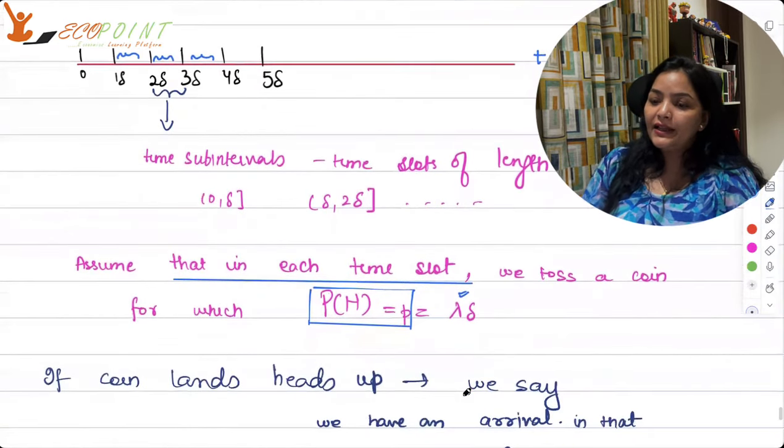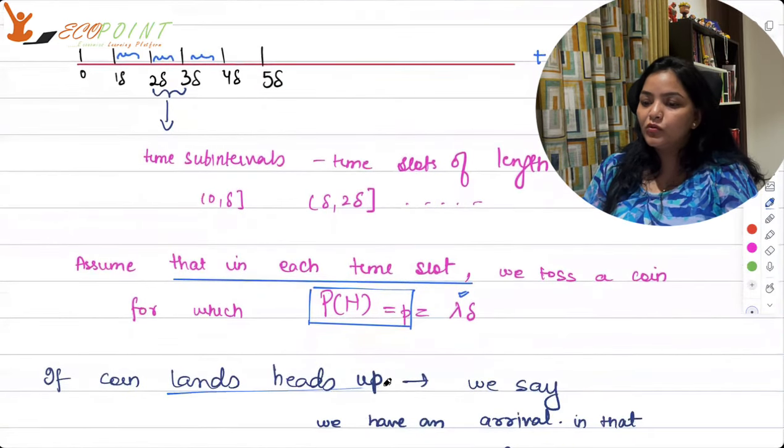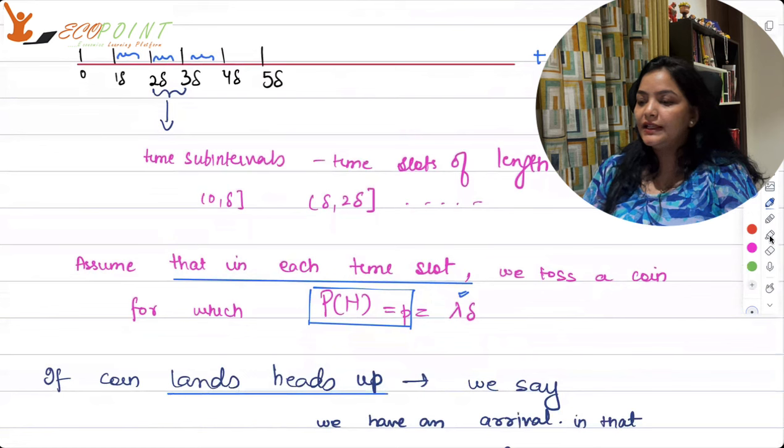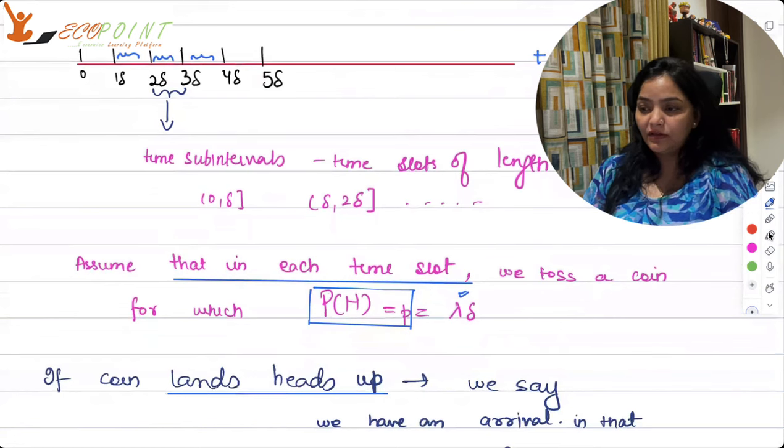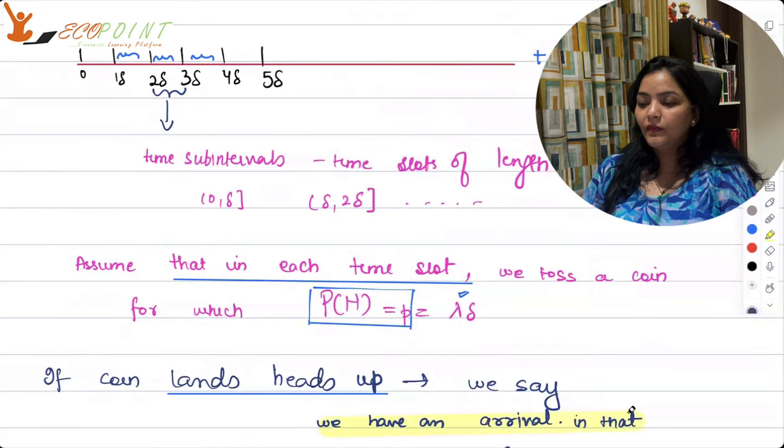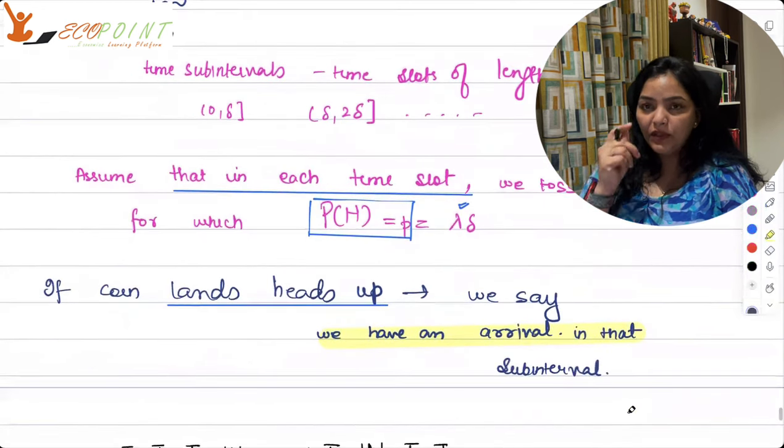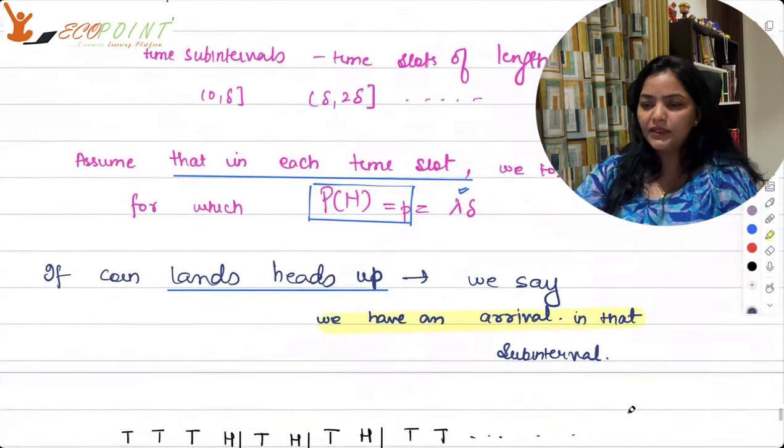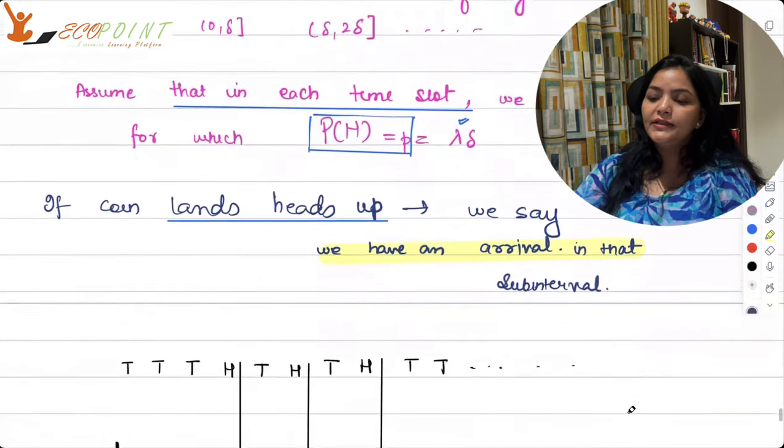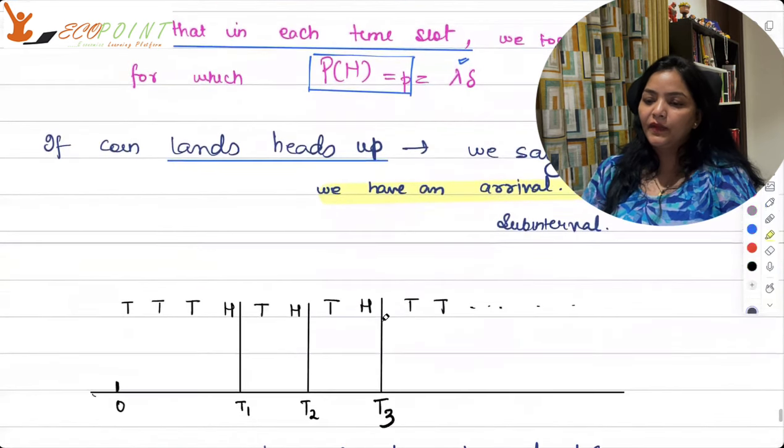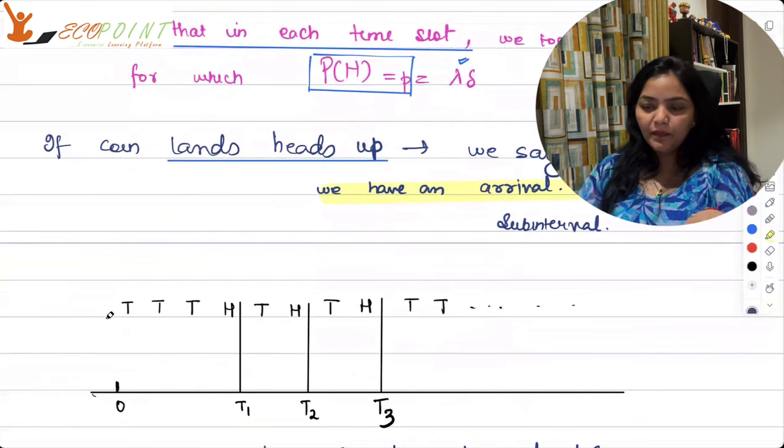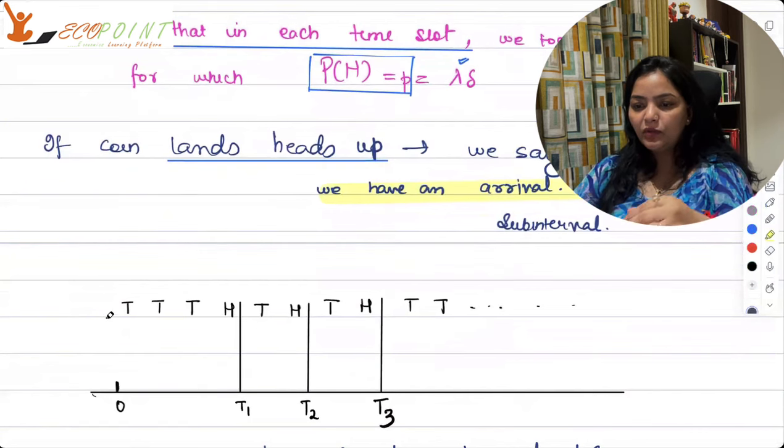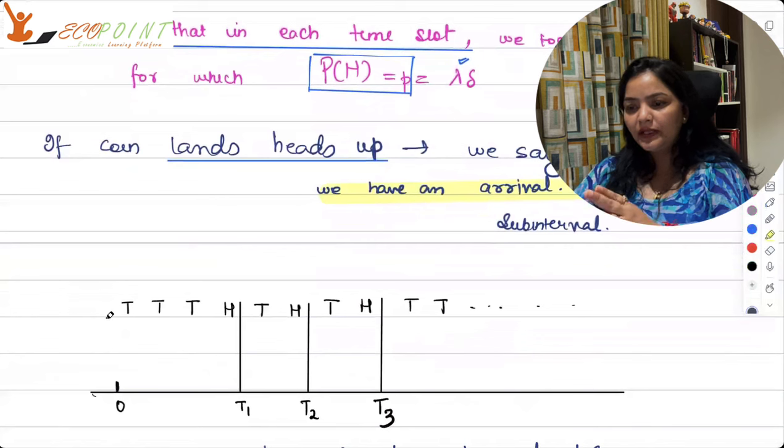If coin lands heads up, we say that's the arrival for us. We'll take that as the arrival in that sub-interval. Otherwise, not. Otherwise, not. The scenario could be like this. Suppose your outcome is tail, tail, tail, head, then tail, tail, head, then tail, tail, tail, tail, tail.